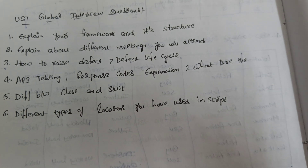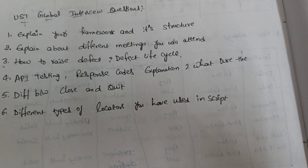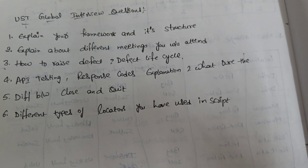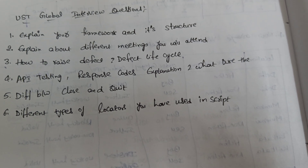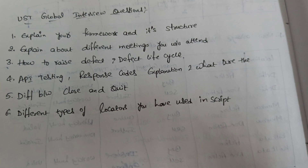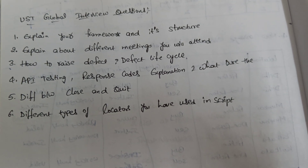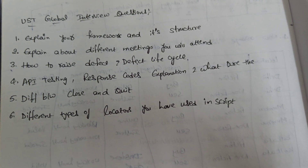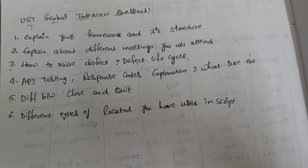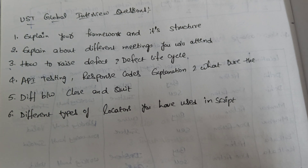The sixth question is: what are the different types of locators you have used in your script? Locators is a big concept so I'll do a separate video on locators. But for the time being, most of the locators I have used in my script are XPath, ID, class name, and name — we can explain it like that.